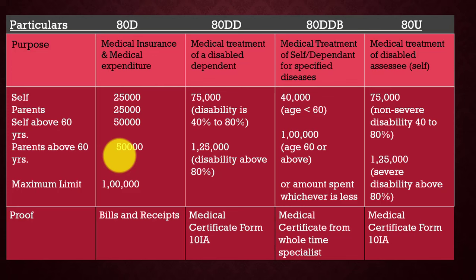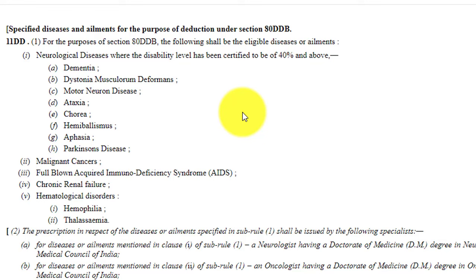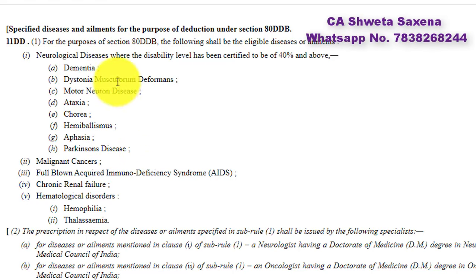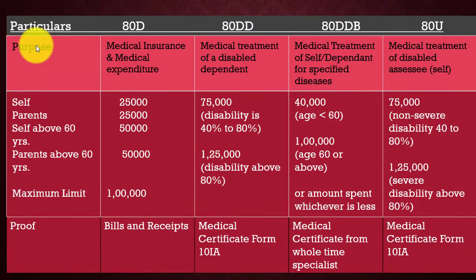As proof for Section 80DDB, you need a medical certificate from a whole-time specialist or practitioner, and payment must be in banking mode. The diseases specified under Section 80DDB as per Income Tax Act Rule 11DD include: neurological diseases such as Dystonia, Motor Neurone Disease, Ataxia, Chorea, and Parkinson's disease; also malignant cancer, AIDS, chronic renal failure, hemophilia, and thalassemia.